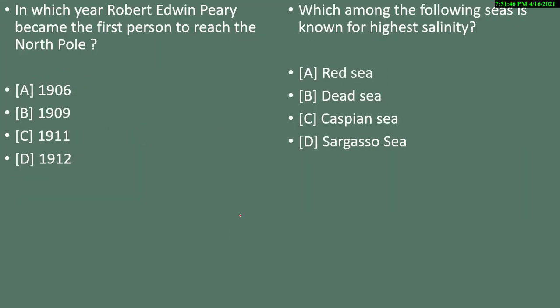Question 9: in which year did Robert Edwin Peary become the first person to reach the North Pole? Options are 1906, 1909, 1911, or 1912. The correct answer is option B — 1909.